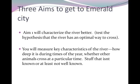So there are three aims I've set up to get into the Emerald City. Aim 1 will help you characterize the river better — maybe test the hypothesis that the river, because of certain characteristics, has an optimal way to cross. And if you knew those characteristics, that would help you downstream in crossing the river. So in Aim 1, you're going to measure key characteristics.